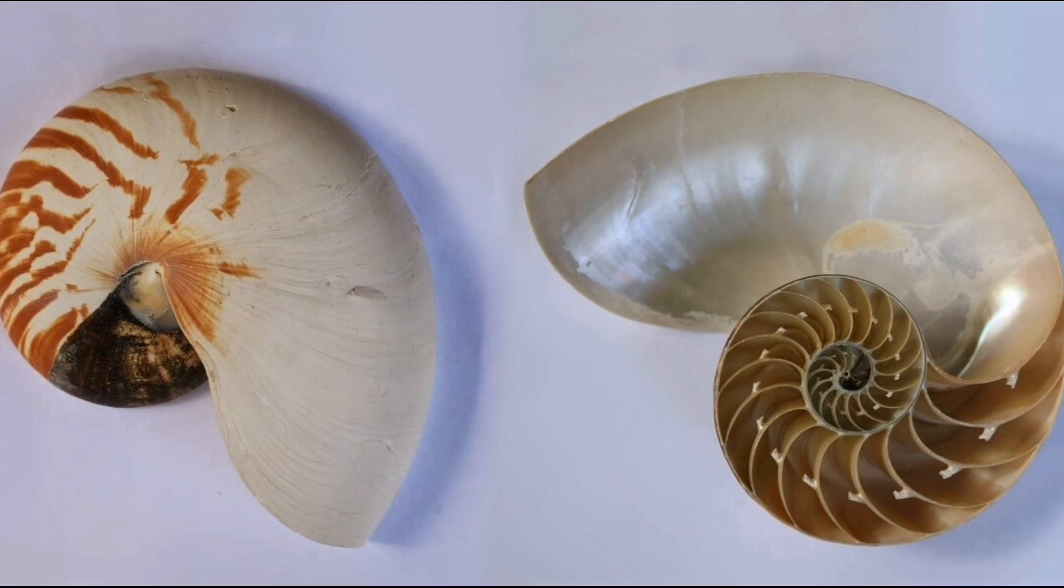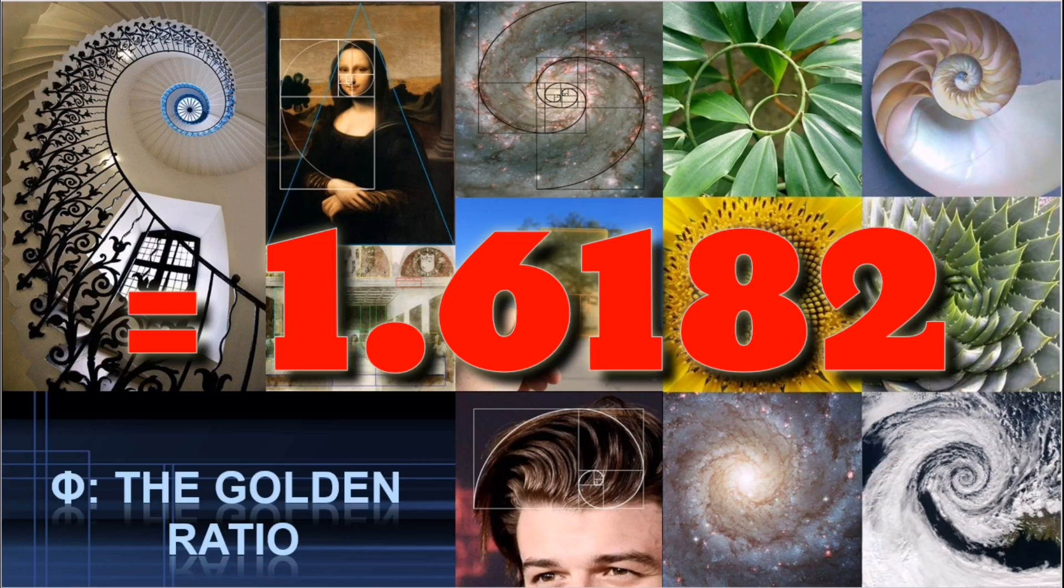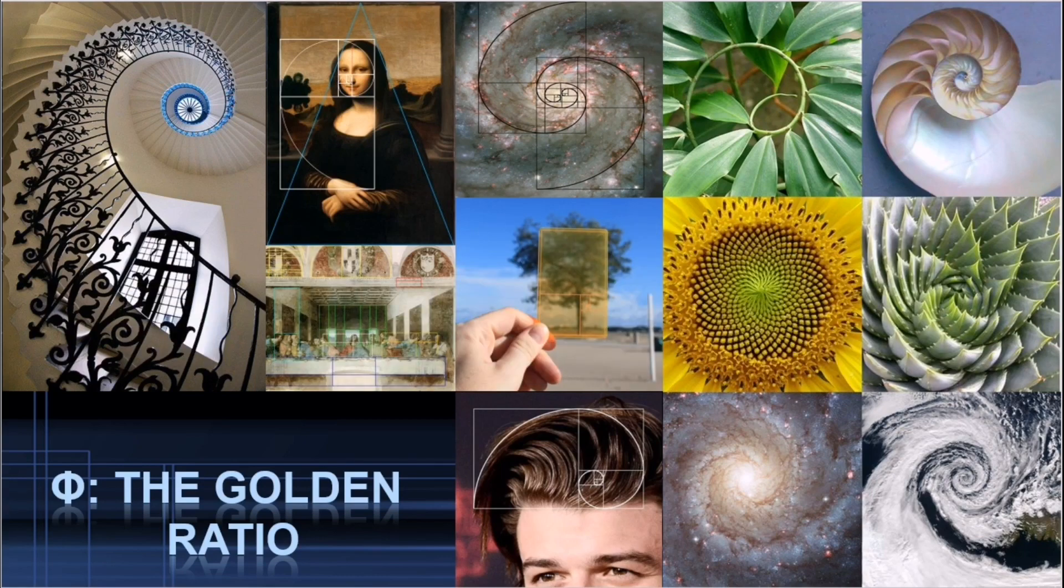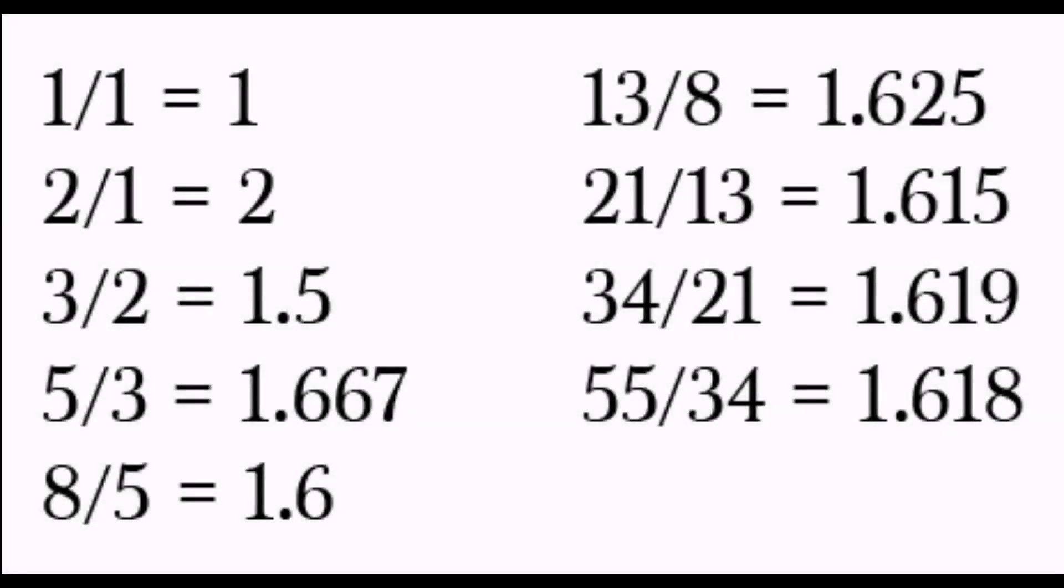It is also interesting to note that the ratios of succeeding Fibonacci numbers approach the number phi, also known as the golden ratio. This is approximately equal to 1.618. The golden ratio can be expressed as the ratio between two numbers, if the latter is also the ratio between the sum and the larger of the two numbers.